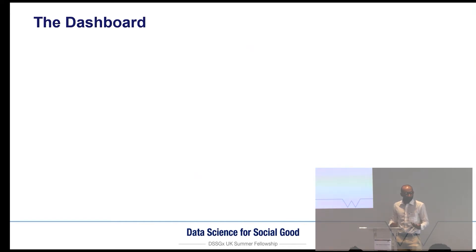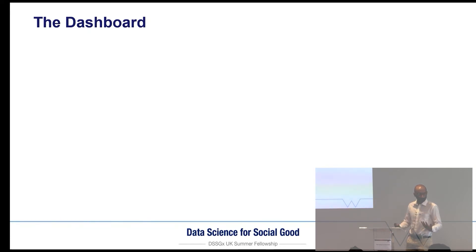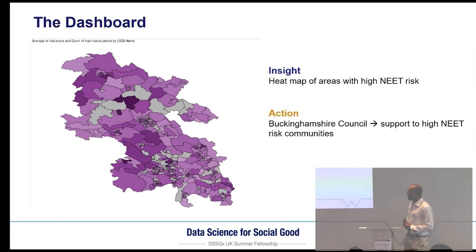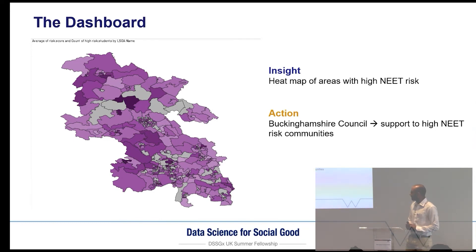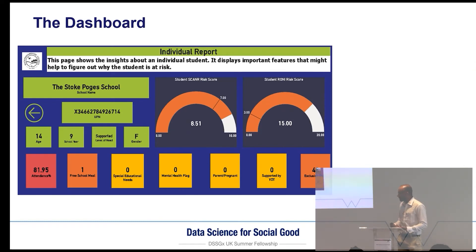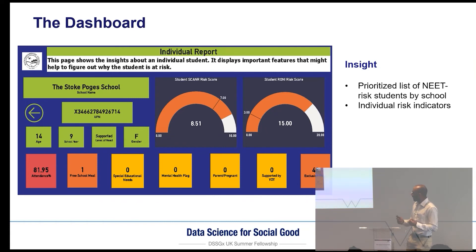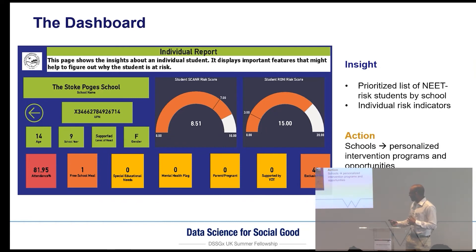Building a machine learning model is not really useful if we can't effectively communicate it to end users. To do this, we integrated with the council's current infrastructure and built a Power BI dashboard. On this dashboard, we included a heat map of different areas in Buckinghamshire County with a high rate of high-risk students, allowing the council to target support to those particular high-risk communities. We also developed a prioritized list of students with high risk scores that can be filtered by school. The council can drill down on particular students to understand why they are at risk and share this with schools for more personalized intervention.